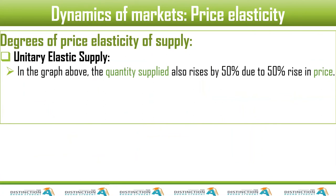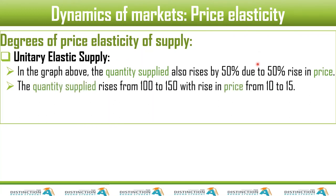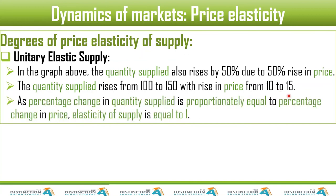In conclusion, in the graph, the quantity supplied also rises by 50% due to a 50% rise in price. Remember — with supply, price rises and quantity supplied also rises. That's not the case with demand: with demand, price rises but demand decreases — the relationship is inverse. Here, with supply, the relationship is positive. The quantity supplied rose from 100 to 150 with a rise in price from 10 to 15.